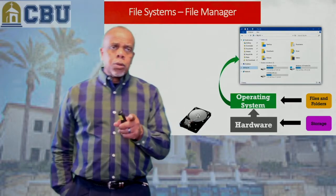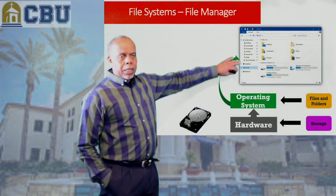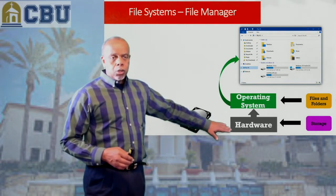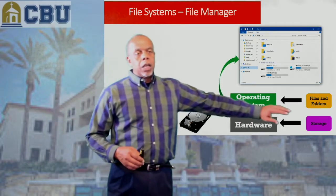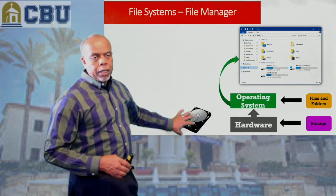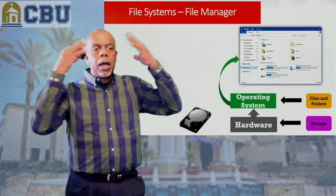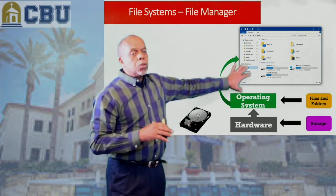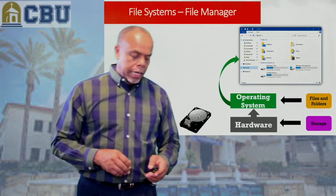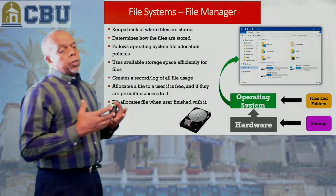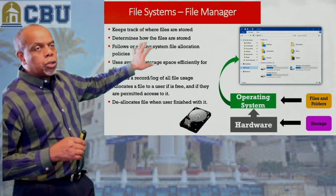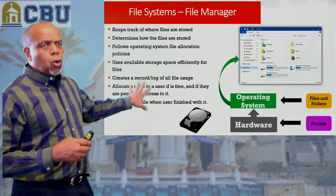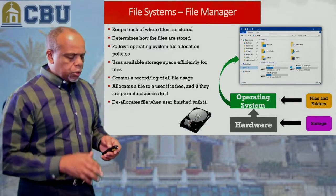When we think about this file system — here's just a pictorial of File Explorer in Windows. You've got a hard drive, the hardware which is storage, and the operating system controls and sets up the illusion of folders and files. On the drive itself, this does not exist — it only exists in our minds and on the screen. The file system keeps track of where files are stored, determines how the files are stored, manages the amount of available memory storage you've got left, and allocates memory and storage space for the files.